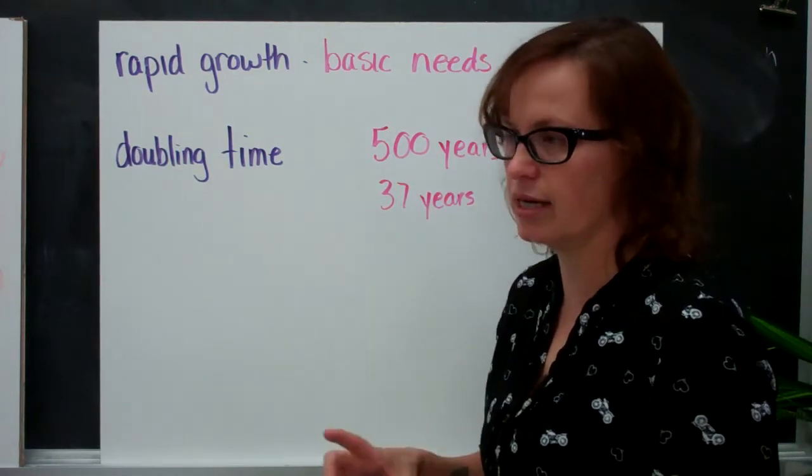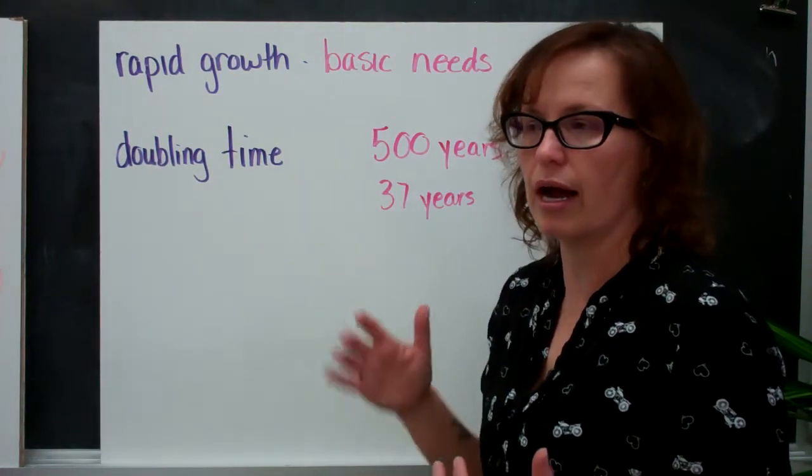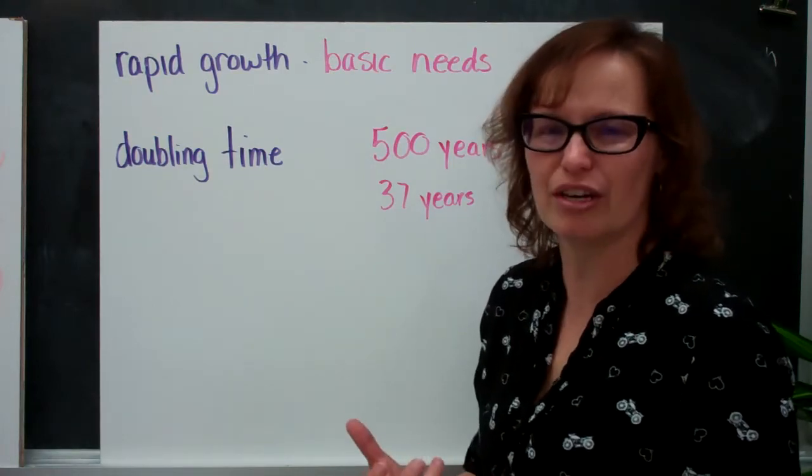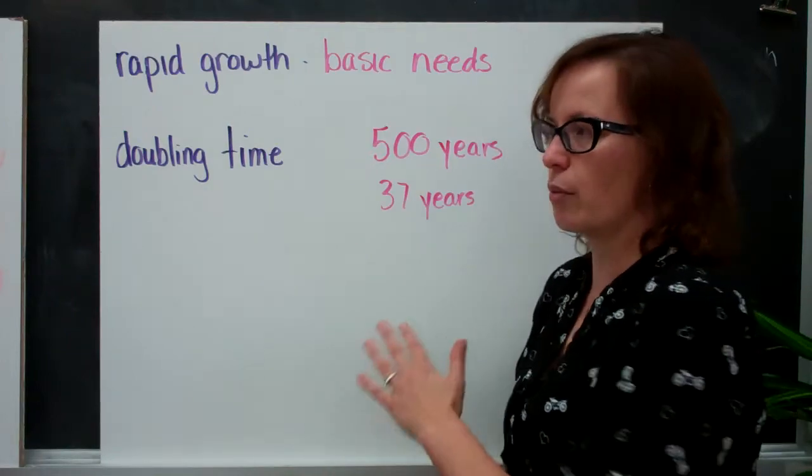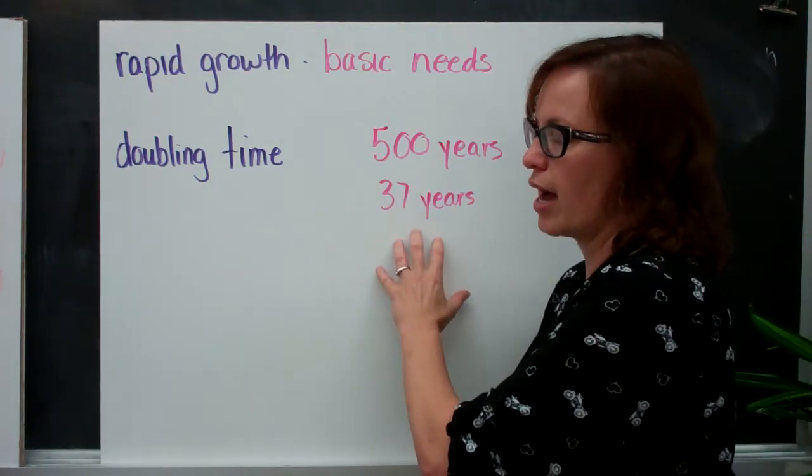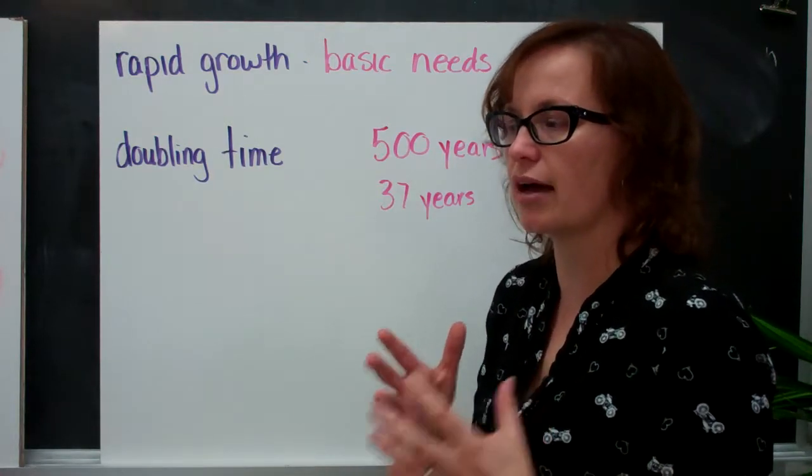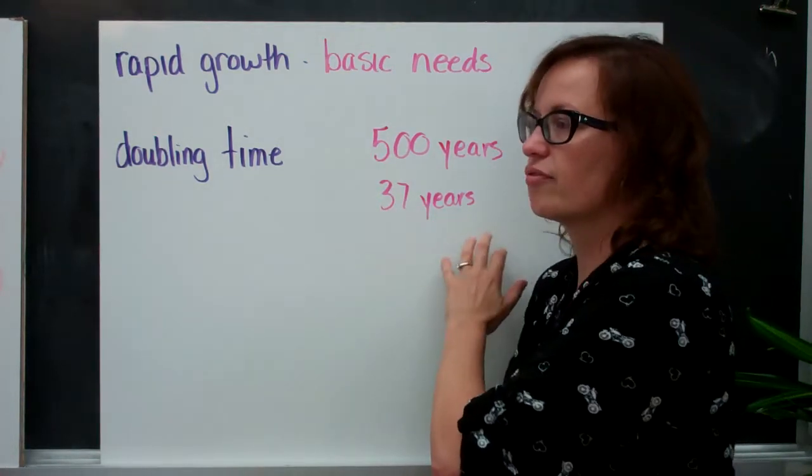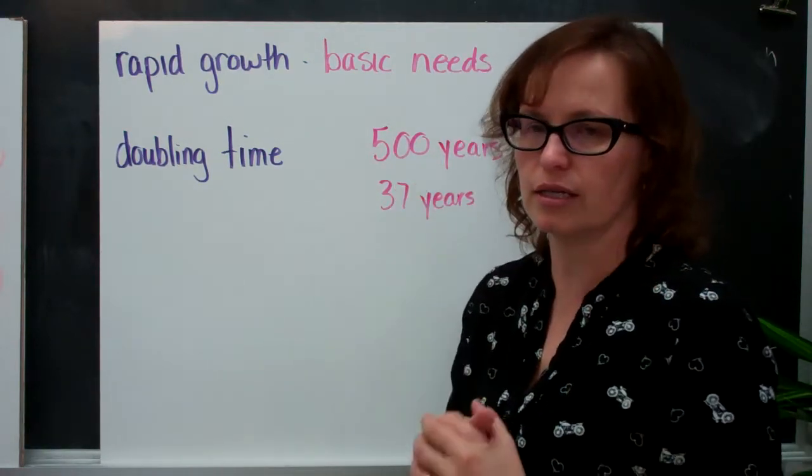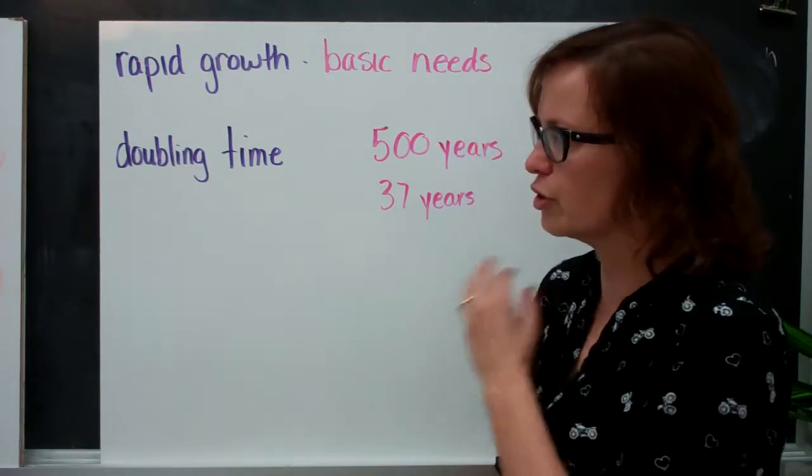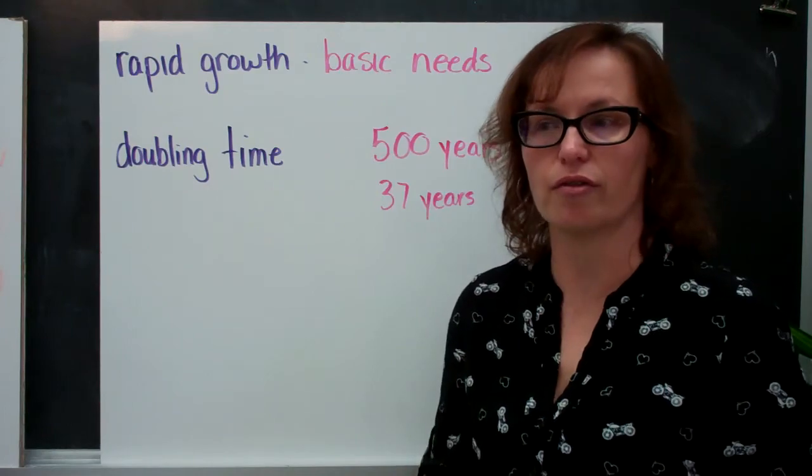In developing countries, the doubling time is much shorter. And so right now it's saying it's around 37 years it takes for a population in a developing country to double. So then when you think about it, if you have more people in a community, even if they start to have fewer children by the simple fact that you have more people who are having children, your population continues to increase. So these are some things to keep in mind when you're looking at the characteristics of a certain community.